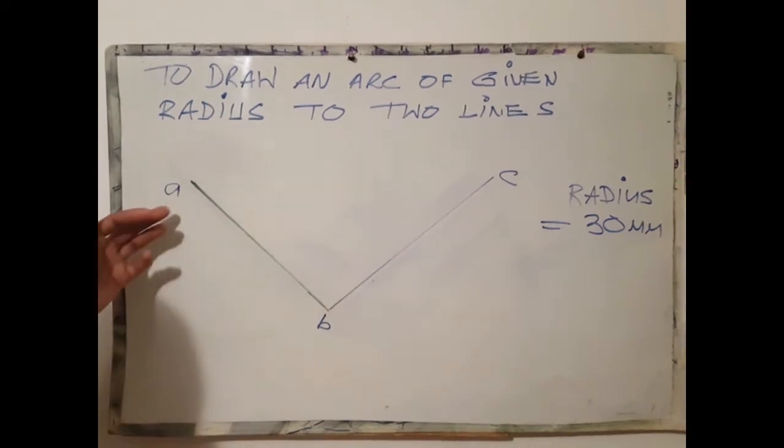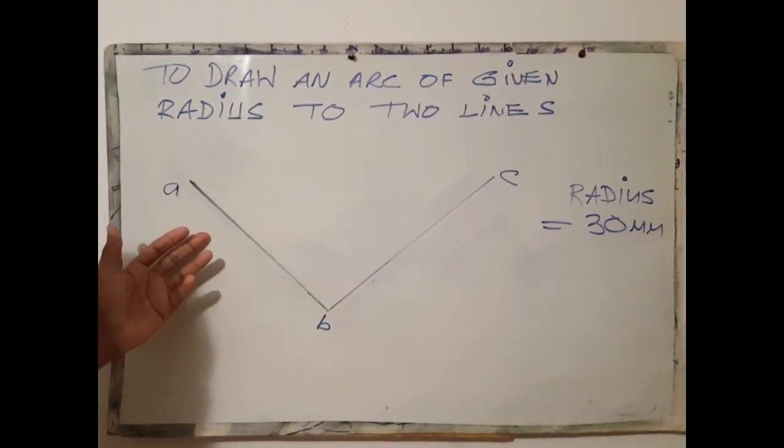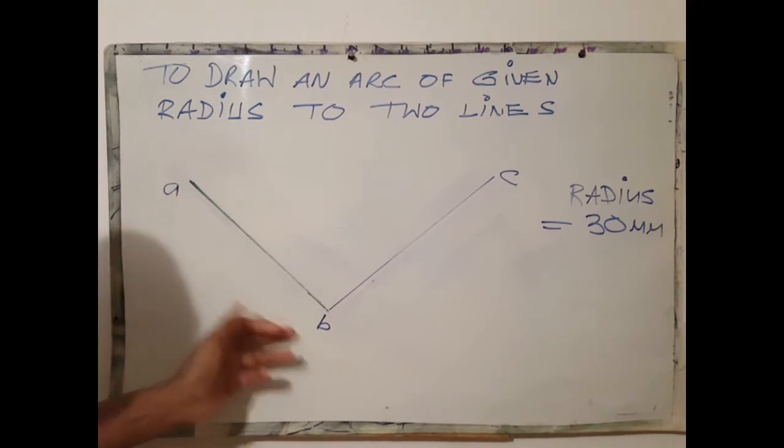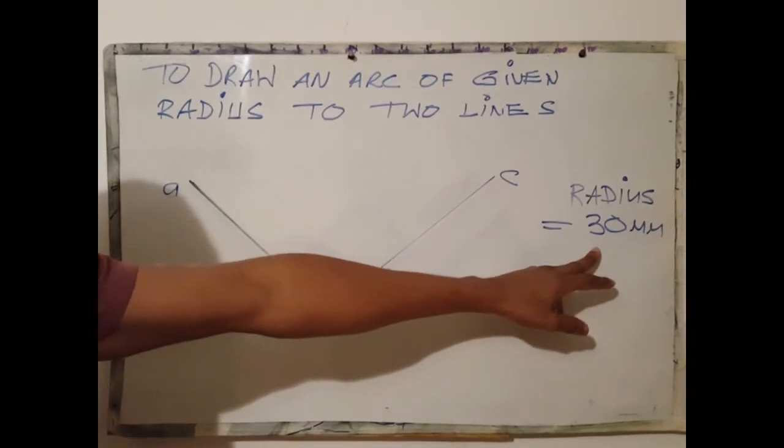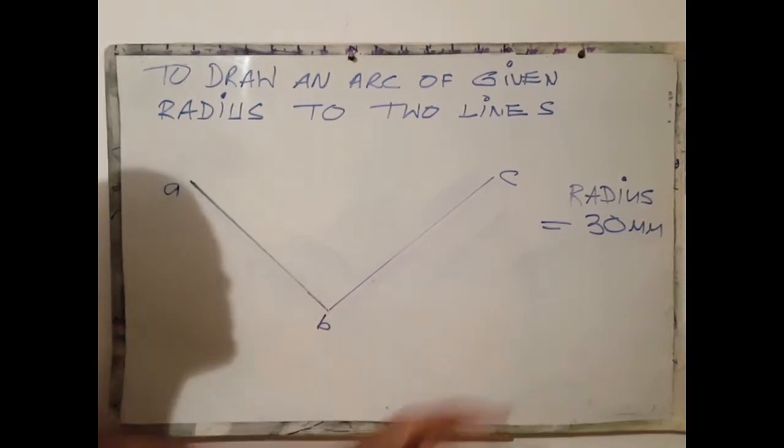The first step is to draw two parallel lines, one at AB, next at BC, equivalent to the distance of the radius, in this case 30 mm.